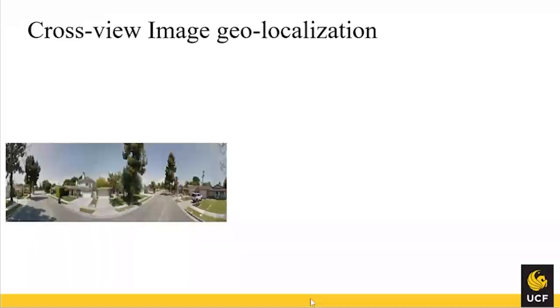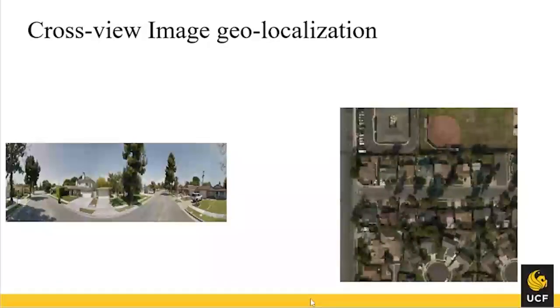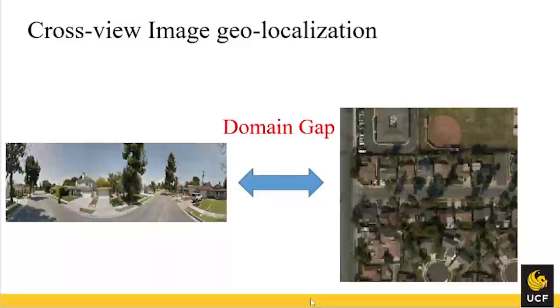Basically, we deal with the cross-view geolocalization problem. Here is the problem setting: we have a query image from the street view — it can be anywhere — and we want to localize it with the aerial view image. We have a set of aerial view images distributed in a city, and we have the GPS location of each reference image. We want to find the best matched image to localize this query. The big challenge is that these two views look very different, so there is a large domain gap.